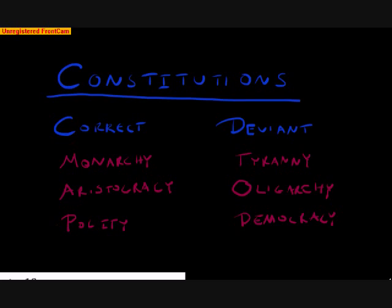Now, let's begin by remembering that for Aristotle, there were six forms of constitution. And these were divided into two kinds. There were correct constitutions and deviant ones.